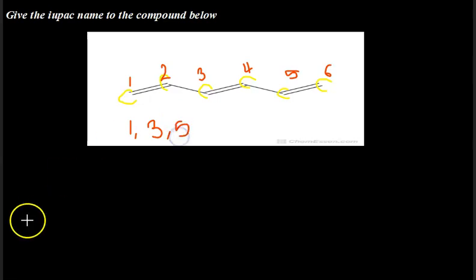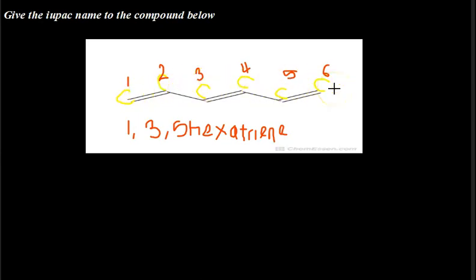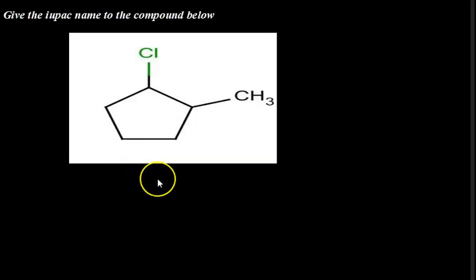This compound is therefore 1,3,5-hexatriene — 'hexa' because it contains six carbon atoms, and 'triene' because it has three double bonds. If you don't know how to assign names to the number of carbon atoms, you can check my previous video. Moving on to our next example.